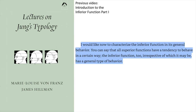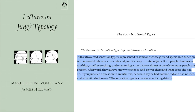I would like now to characterize the inferior function and its general behavior. All superior functions have a tendency to behave in a certain way, and the inferior function too, irrespective of which it may be, has a general type of behavior. The extroverted sensation type is represented in someone whose gift and specialized function is to sense and relate in a concrete and practical way to outer objects. Such people observe everything, smell everything, and on entering a room, know almost at once how many people are present.